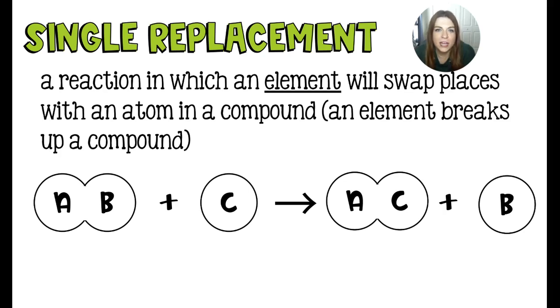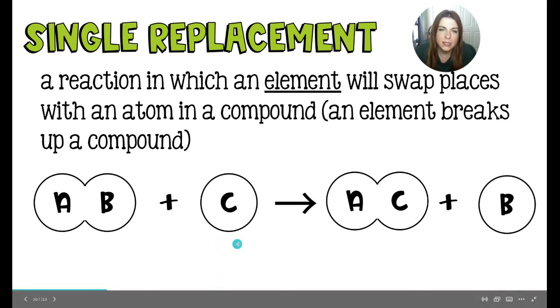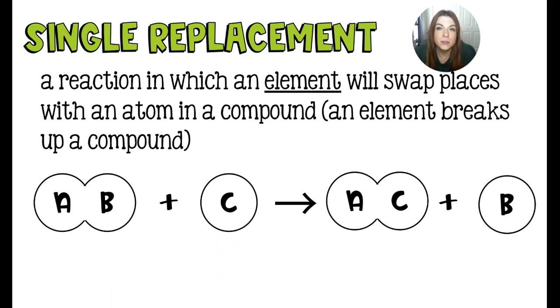Next up, we have the single replacement reaction. Here you are going to have some single element. It may be a diatomic element, but it's going to be an element all by itself. And it's going to come in and swap places with an atom that is part of a compound. So here we have AB, the compound, and C, the element. C comes in, kicks out B, kind of steals its spot. And now B is left all on its lonesome.